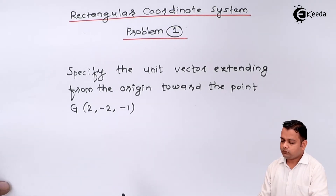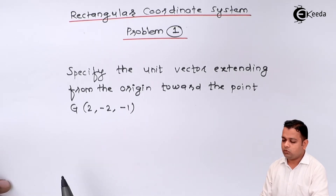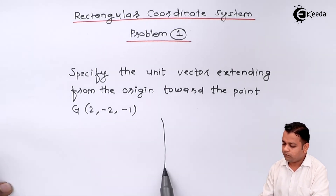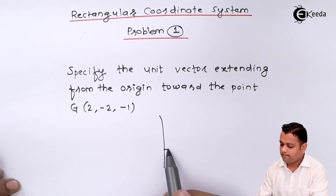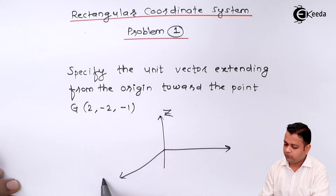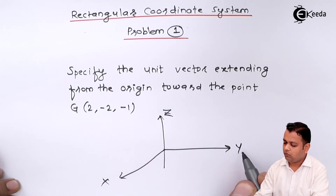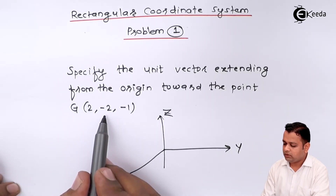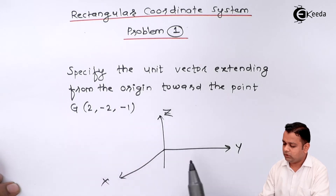In this problem, a point is given capital G. I draw the rectangular coordinate system structure: z-axis, x-axis, y-axis. So x having 2, y having minus 2, z having minus 1.